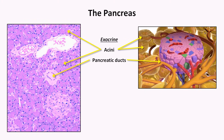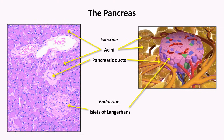The second tissue type are the islets of Langerhans. The islets are responsible for the pancreas' endocrine function. Instead of secreting enzymes into the gut, they secrete hormones into the blood, most notably insulin and glucagon. They're named after Paul Langerhans, a German pathologist and physiologist from the 19th century, who first described them when he was a 22-year-old student.